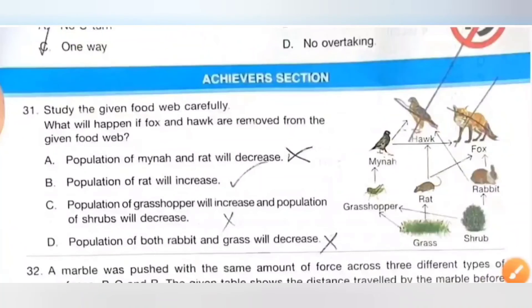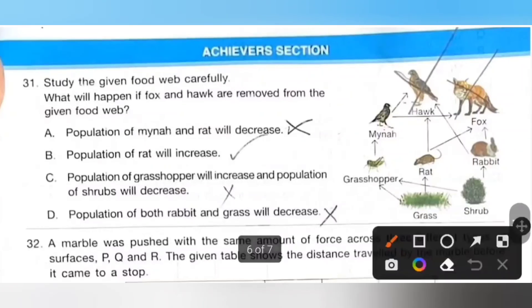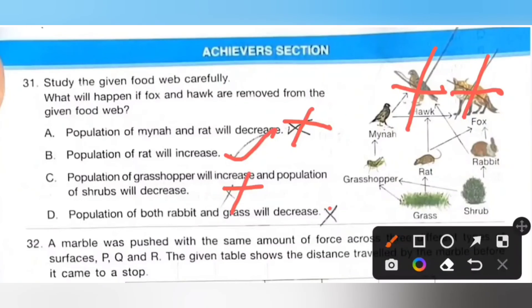Next, achiever section. Thirty-one: Study the given food web carefully. What will happen if fox and hawk are removed from the given food web? Option A: Population of myna and rat will decrease, no. B: Population of rat will increase, it is correct. C: Population of grasshopper will increase and population of shrew will decrease, it is also incorrect. D: The population of both rabbit and grass will decrease, it is also incorrect. So option B is the correct answer.